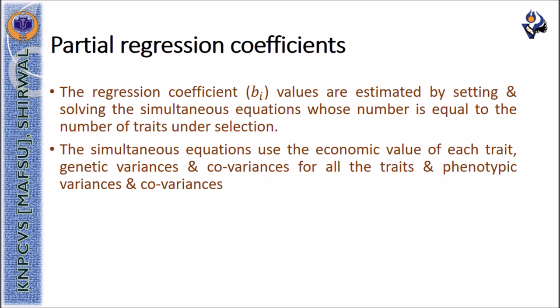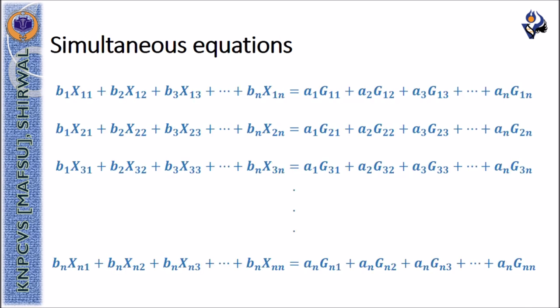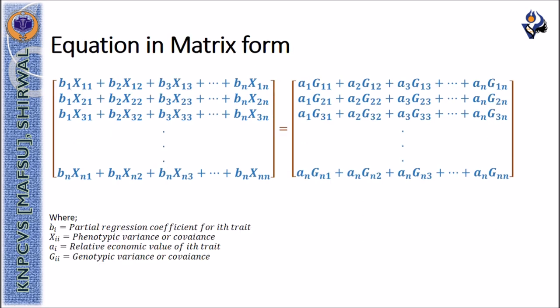is equal to the number of traits under selection. The simultaneous equations use the economic value of each trait, genetic variances and covariances for all the traits, and also phenotypic variances and covariances of all the traits. The simultaneous equations can be set as shown over here. It can be put in the matrix form where bi denotes partial regression coefficients for ith trait, xii are the phenotypic variances or phenotypic covariances, ai is the relative economic value of ith trait,